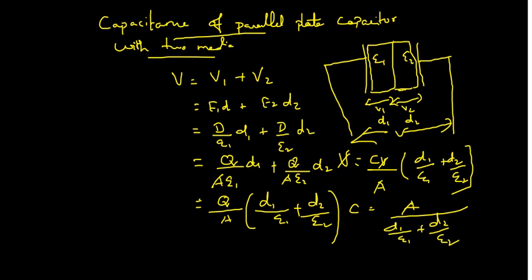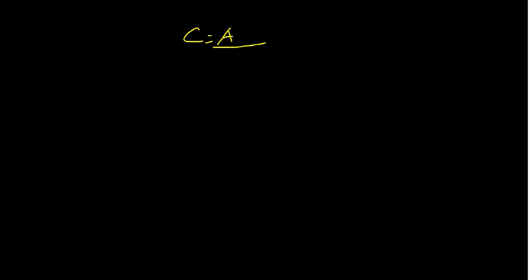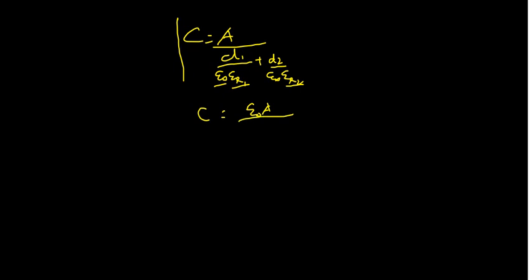Finally, we can write this expression as C is equal to A divided by (D1 divided by epsilon0·epsilonR1 plus D2 divided by epsilon0·epsilonR2), because the permittivity in free space epsilon0 is the same, but the relative permittivity is different for different media. Taking epsilon0 to the numerator, C equals epsilon0·A divided by (D1/epsilonR1 plus D2/epsilonR2). This is the final expression for C.